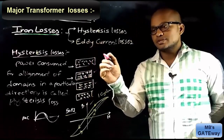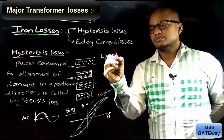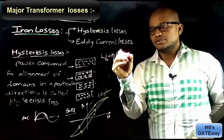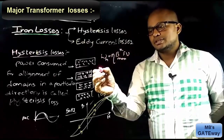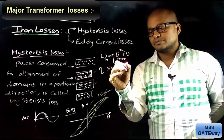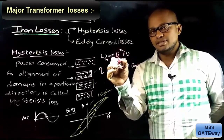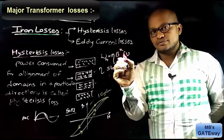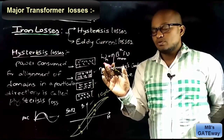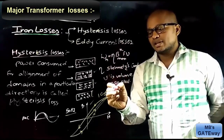For a 50 Hz frequency input to the transformer, there are 50 cycles per second, meaning the domains in the transformer core must reverse 50 times per second. We can find the hysteresis losses by the Steinmetz formula: WH = η · Bmax^x · F · V, where η represents the Steinmetz constant, Bmax is the maximum flux density, F is the frequency, and V is the volume.